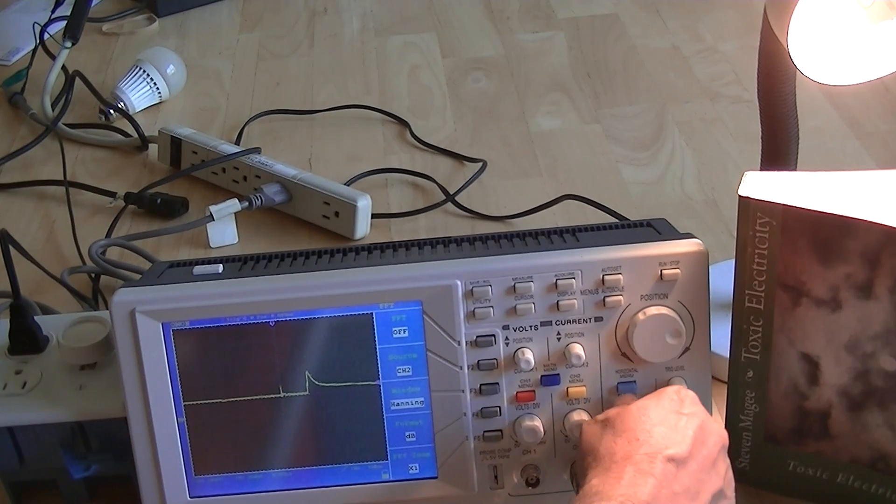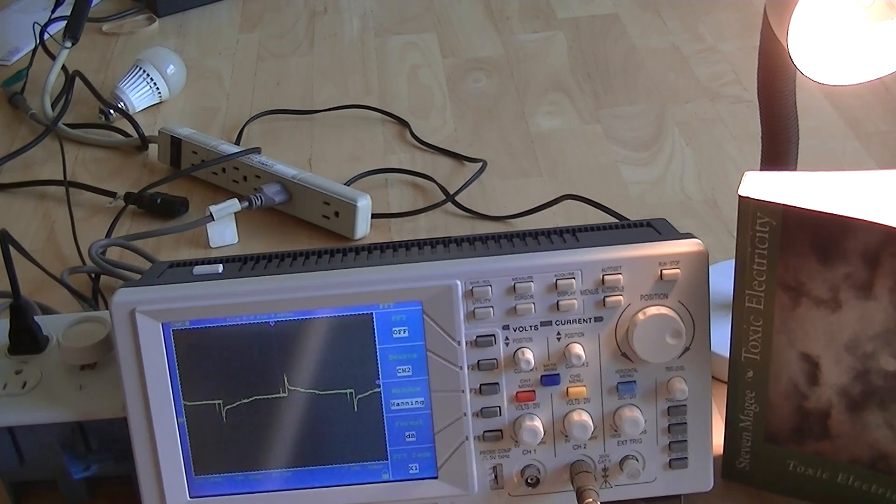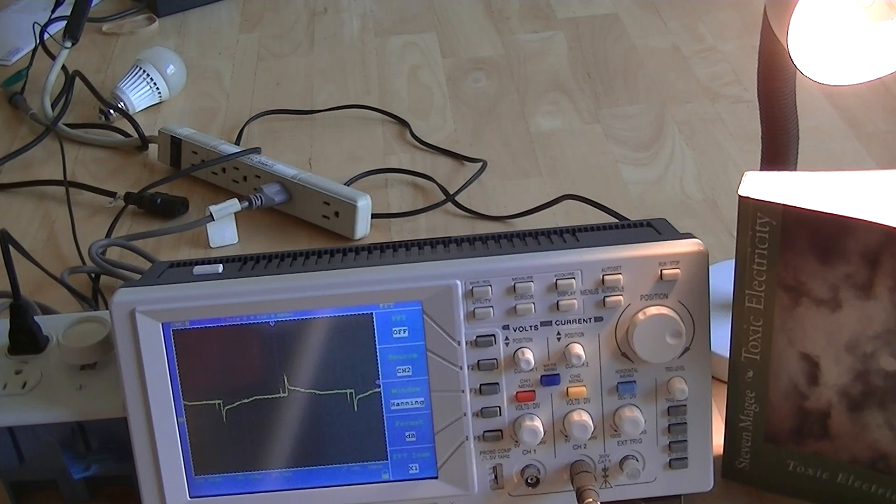So we need to adjust our time base. So our time base right now is on two and a half milliseconds per division in the horizontal direction. And we're on 500 millivolts per division in the vertical direction.